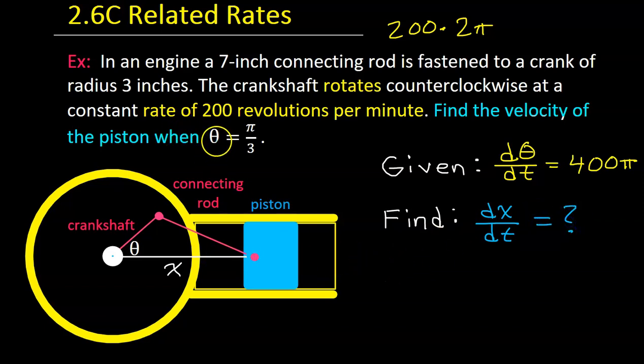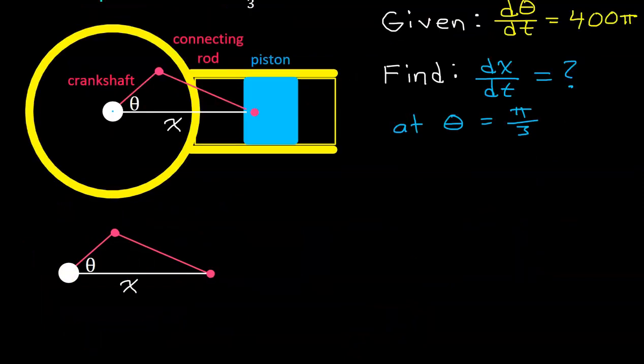They're giving us this one extra piece of information. We want the velocity when theta equals pi over 3. So, I'll just tack this on at theta equals pi over 3. Now, I'm just going to recopy this triangle separate from the picture so we can see it better. Don't forget, we are given that the length of the crankshaft is 3 inches and the length of the connecting rod is 7 inches. So, if we want an equation connecting the x and the theta, we can use the law of cosines.